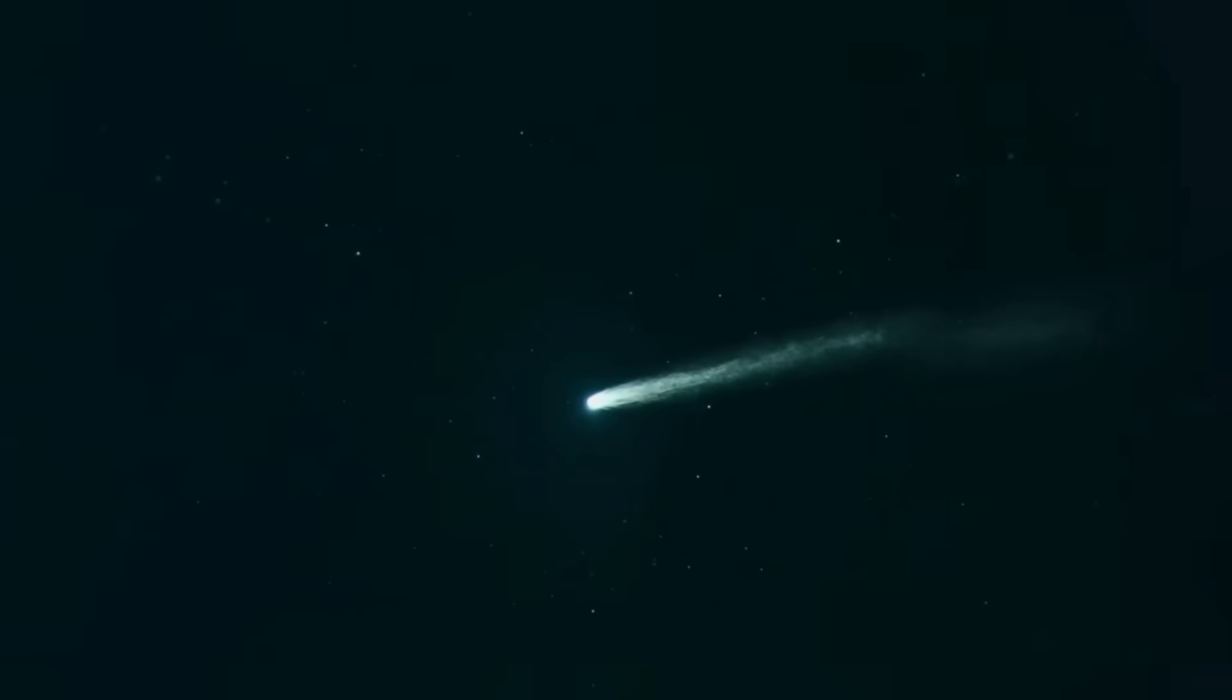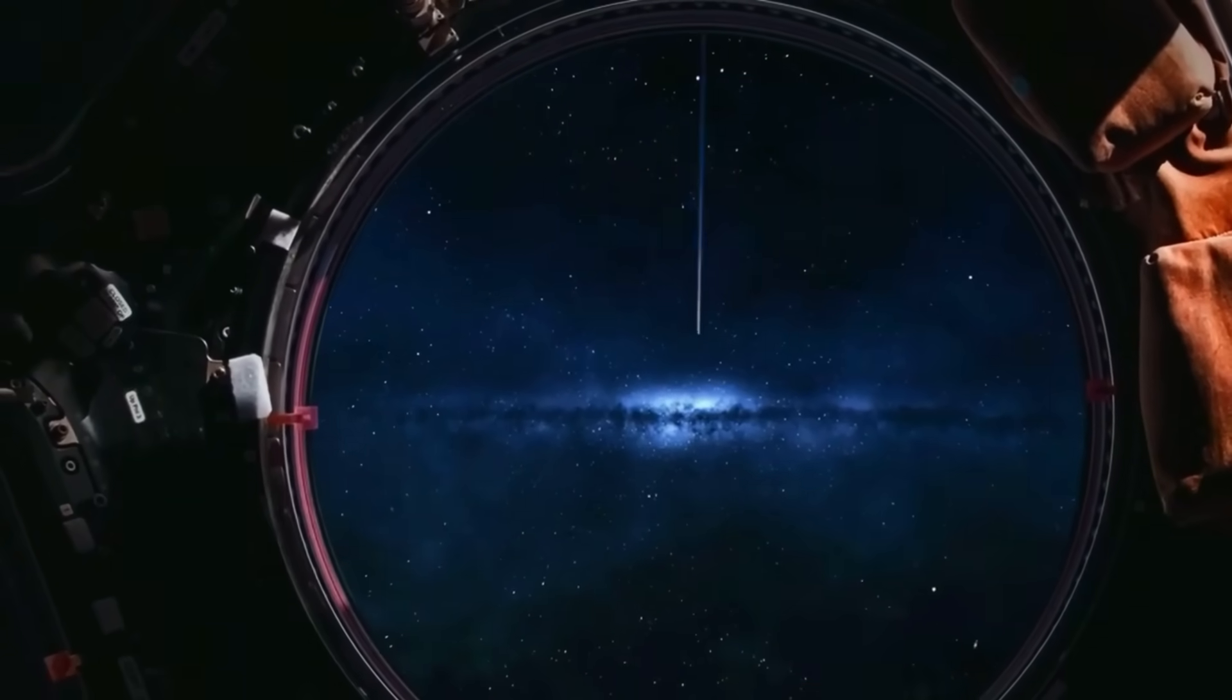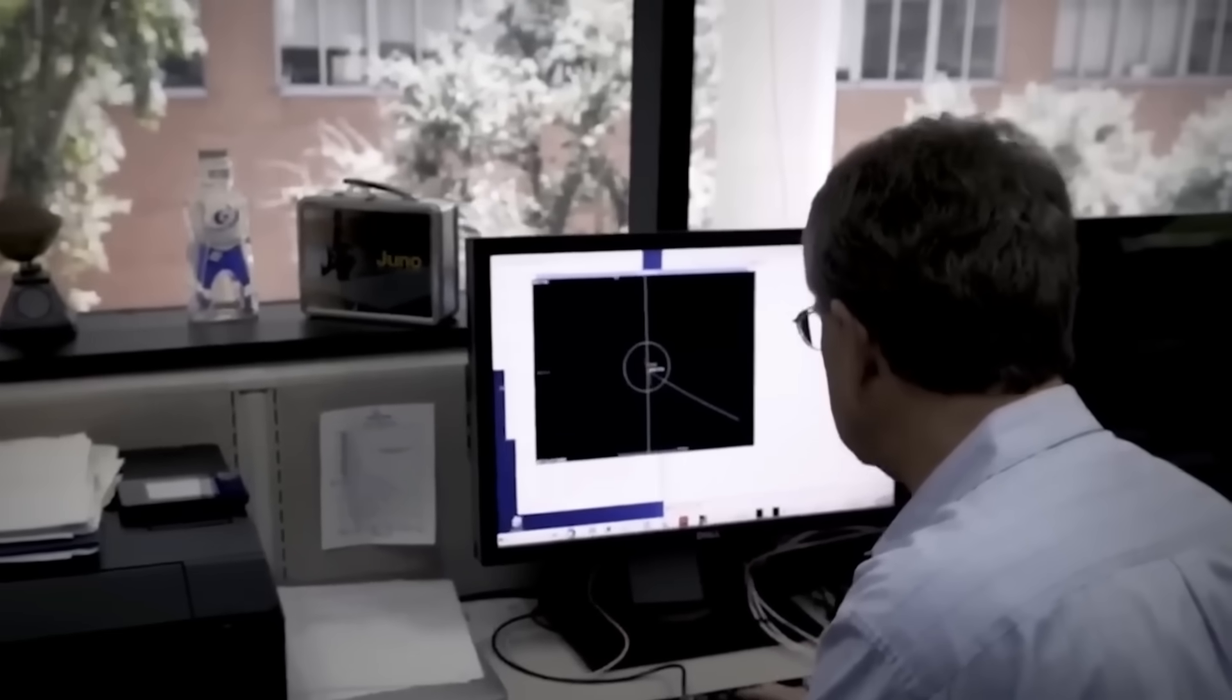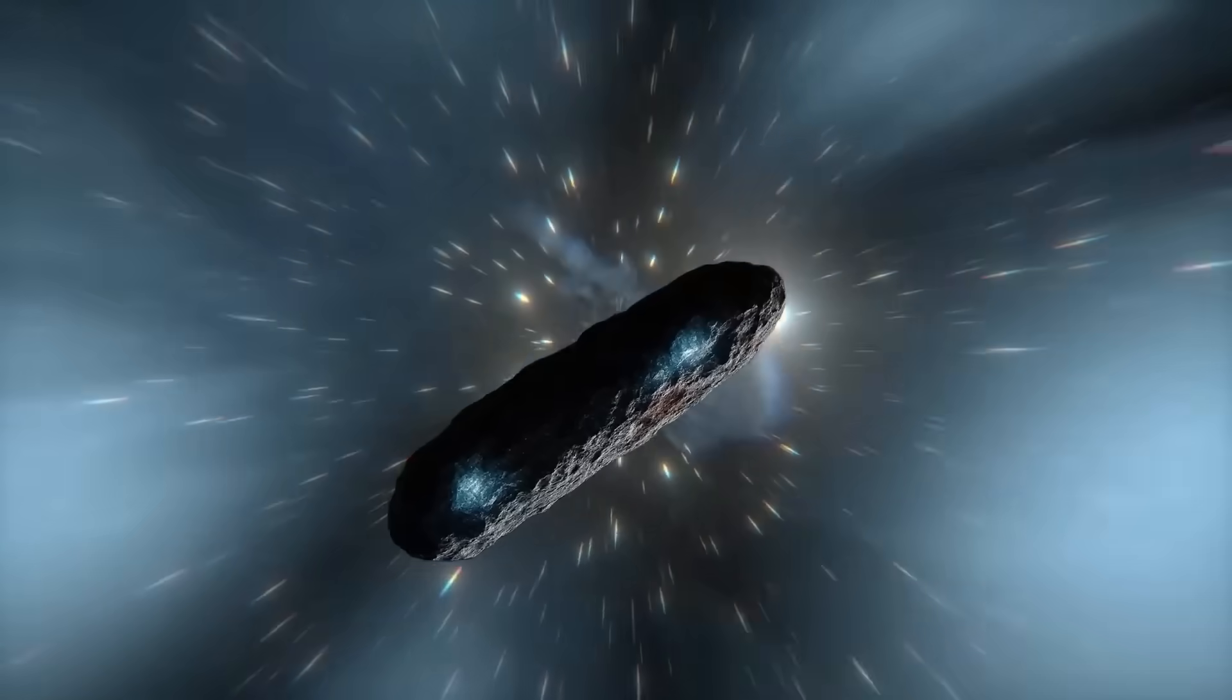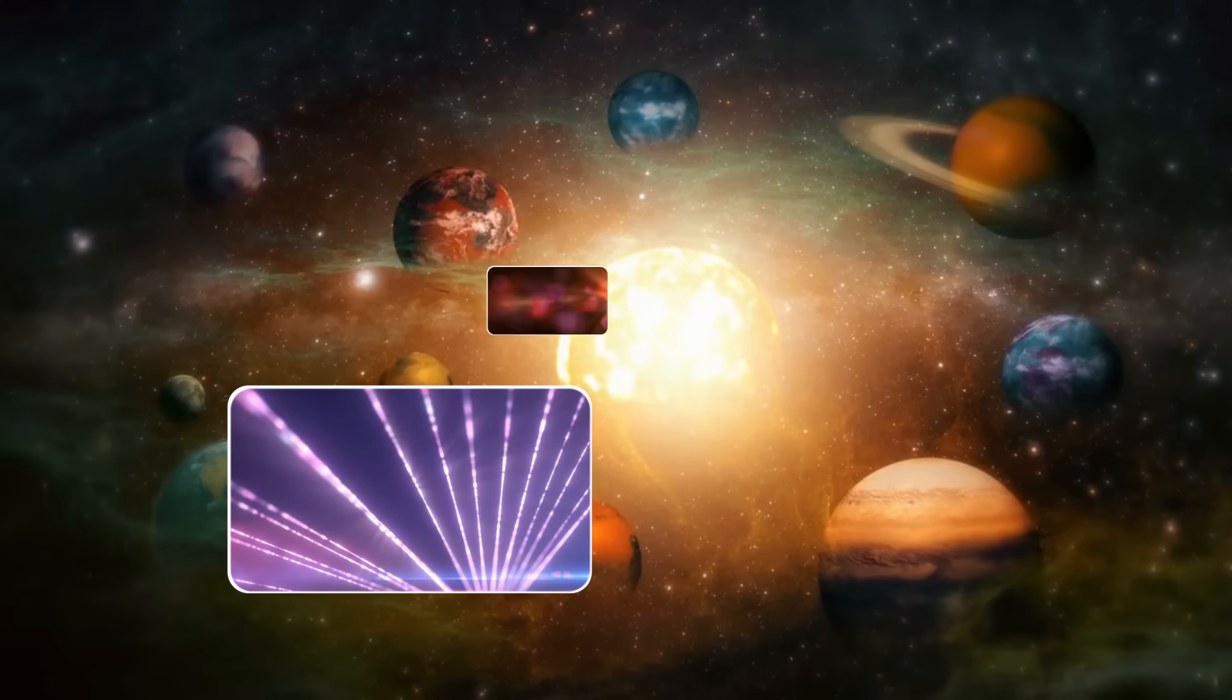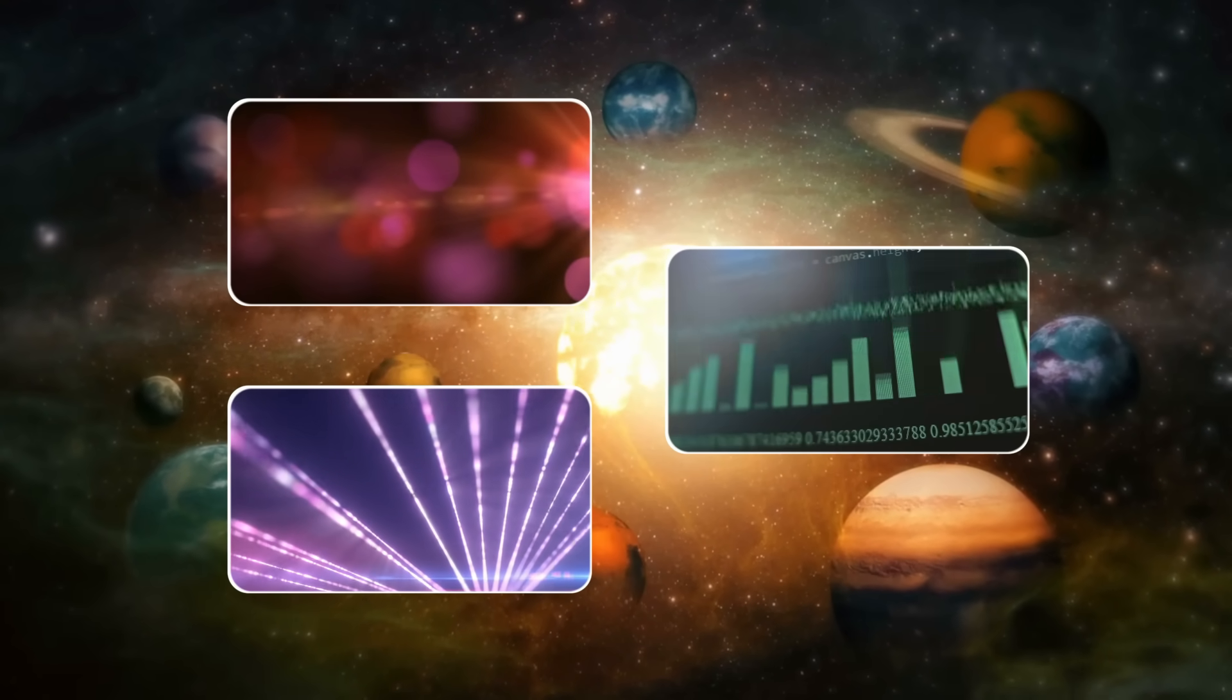Think about it. An interstellar object moving at impossible speeds presents the perfect target practice. How do you track something that fast? How do you communicate with it? How do you even know if your signals are getting through? Some experts believe this could have been a dry run - not to destroy 3i/ATLAS, but to see how a fast-moving interstellar body reacts to directed signals: lasers, particle beams, even experimental communication arrays that we don't know exist yet.